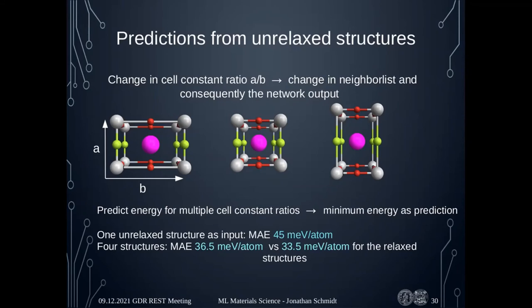Regarding which ratios to use: for the first round of high-throughput searches without any training data, we only know from symmetry considerations which are possible, so we take a few. Once we have data from the first round, we can check the distribution of ratios and do another round with a model transfer-learned to that dataset. The four ratios used are based on what we know from our training set as sensible structures.